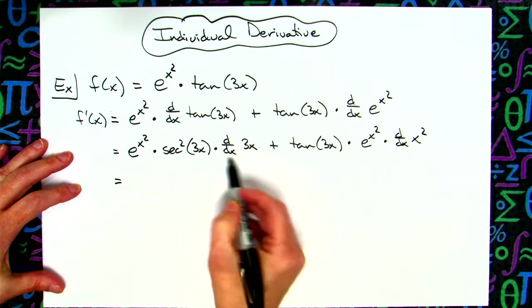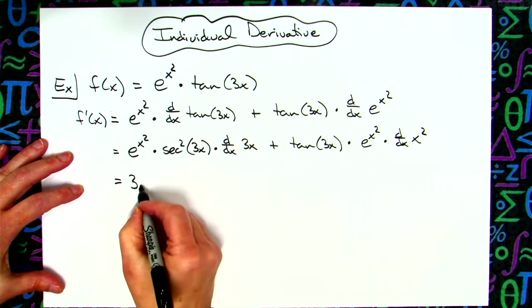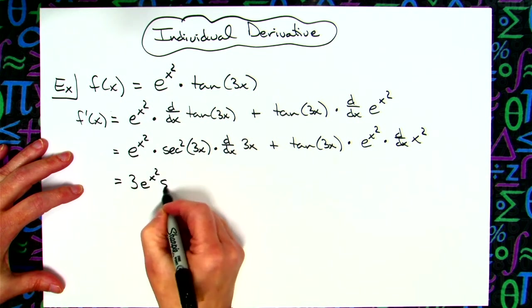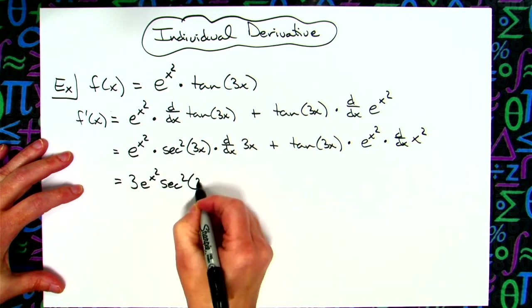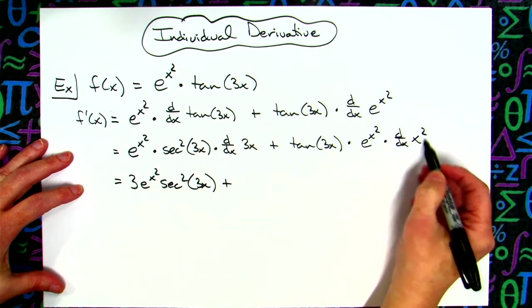The derivative here is going to be a 3, and I'm going to put it in the front, so I'll have a 3, e to the x squared, secant squared of 3x. And then taking the derivative here, I'm going to have a 2x.